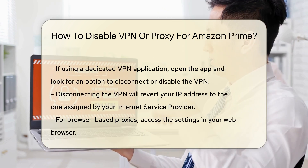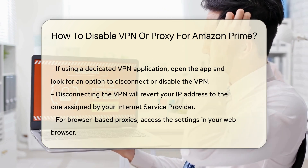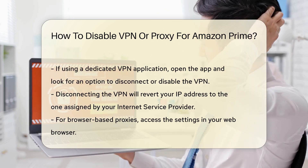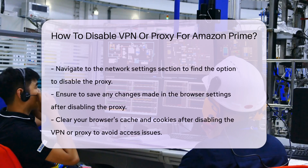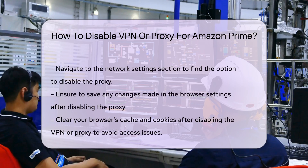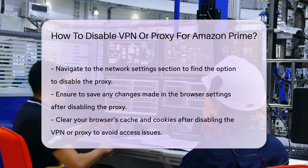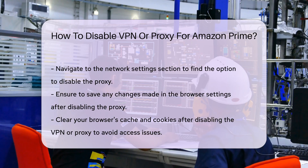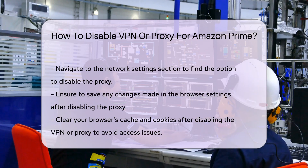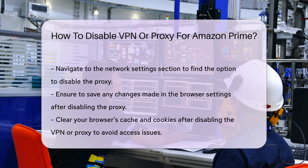For browser-based proxies, locate the settings in your web browser. Navigate to the network settings section. Here, you will find the option to disable the proxy. Make sure to save any changes you make.